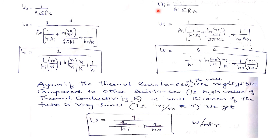Similarly, the overall heat transfer coefficient based on the inside surface area Ui is given by 1 divided by Ai into sigma of thermal resistance. After substituting and simplifying — with Ai divided by A0 giving Ri/R0, and 2πL terms canceling — the final expression is: Ui = 1 / (1/Hi + log(R0/Ri)·Ri/K + (1/H0)·(Ri/R0)). This is the overall heat transfer coefficient based on the inner surface of the cylinder.